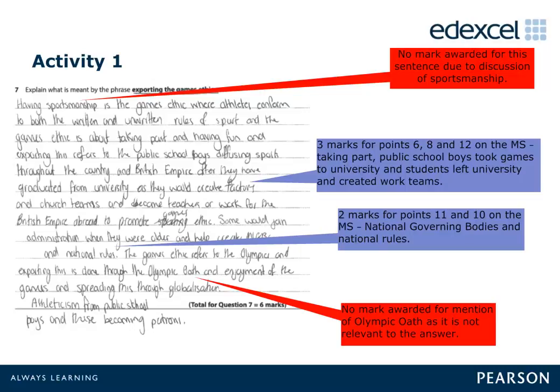Activity 1, Question 7 was awarded a true mark of 5. There are 6 marks available, therefore learners should consider 6 different points. In this example, the learner gains credit for: taking part; public school boys took games to university; students left university and created work teams; reference to national governing bodies; and mention of national rules. No further credit was given for sportsmanship or the Olympics. Thus, the learner gained 5 of the available 6 marks.